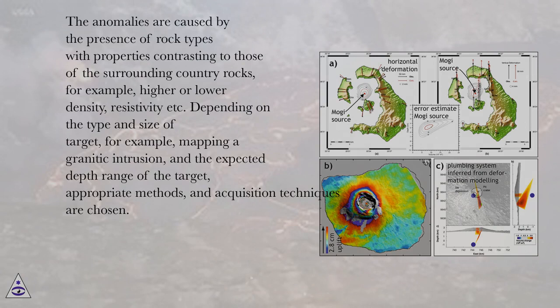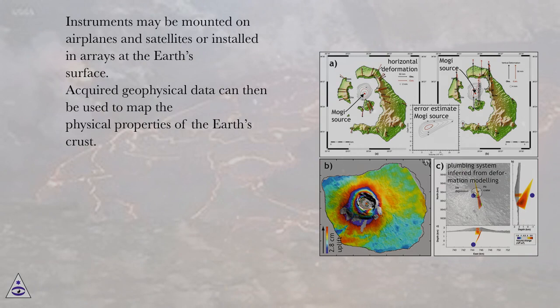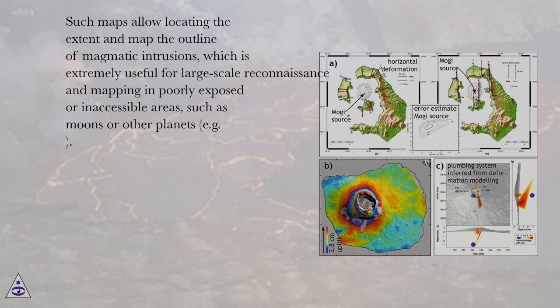Depending on the type and size of target — e.g., mapping a granitic intrusion — and the expected depth range of the target, appropriate methods and acquisition techniques are chosen. Instruments may be mounted on airplanes and satellites or installed in arrays at the earth's surface. Acquired geophysical data can then be used to map the physical properties of the earth's crust. Such maps allow locating the extent and outline of magmatic intrusions, which is extremely useful for large-scale reconnaissance and mapping in poorly exposed or inaccessible areas, such as moons or other planets.